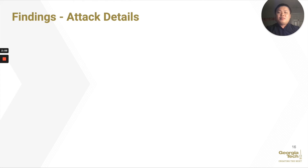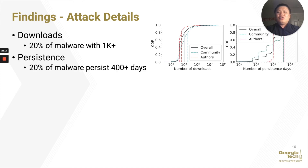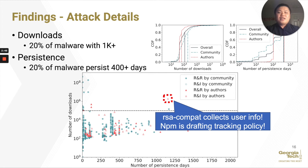To understand this malware more, we also queried the registries for their download data and persistence data. We find that 20% of them are downloaded more than a thousand times, and 20% have persisted in registries for over 400 days. We then correlate persistence days with download data and find 18 packages downloaded more than 100,000 times, four of which are reported by us. In particular, RSA Compat was reported by us but not removed because it's tracking users. NPM replied that they are drafting user tracking policies, implying that the boundaries between maliciousness and benign need more work.